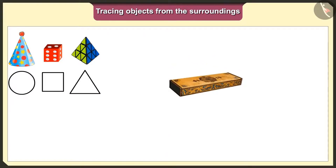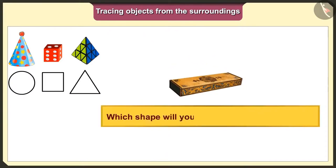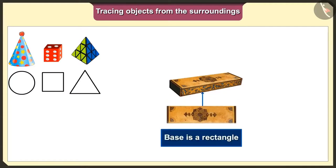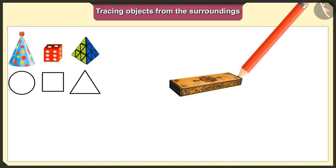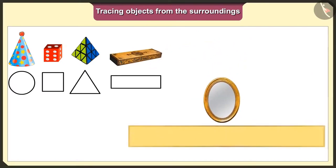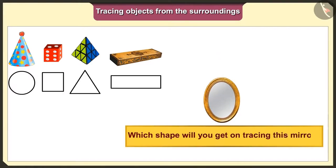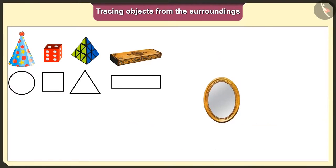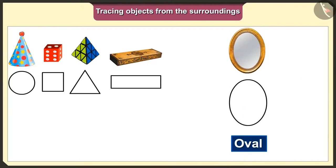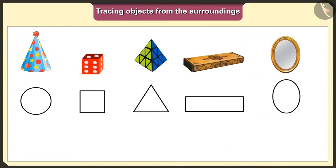Friends, can you all guess which shape we would get when we trace this pencil box? The base of the pencil box is a rectangle, so we will get a rectangle shape when we put it on paper and trace it. Now, which shape would we get when we trace this mirror? The base of this mirror is oval, so we will get an oval shape when we put it on paper and trace it.